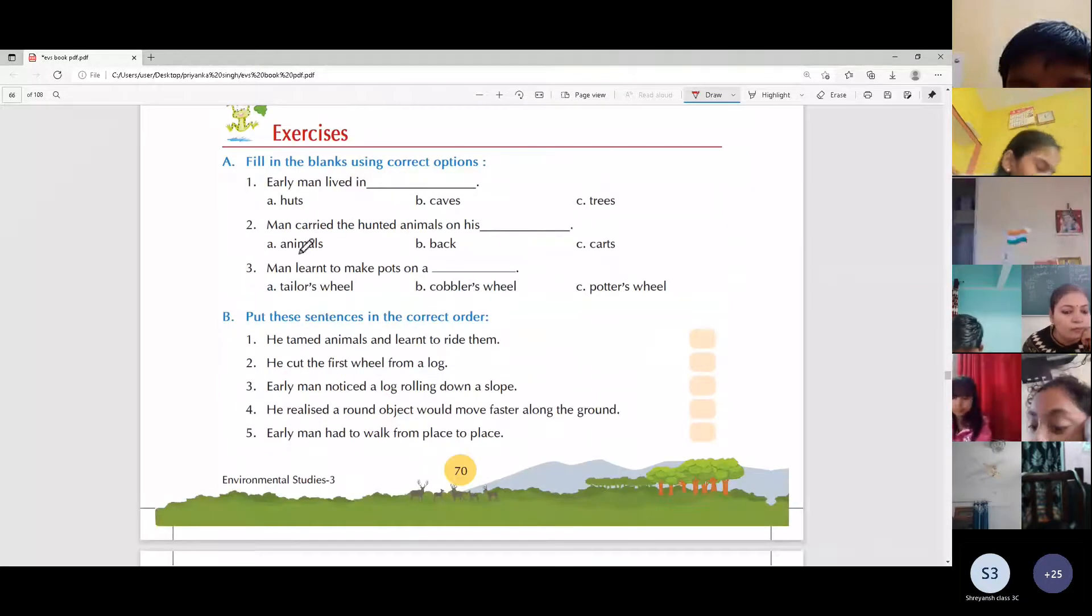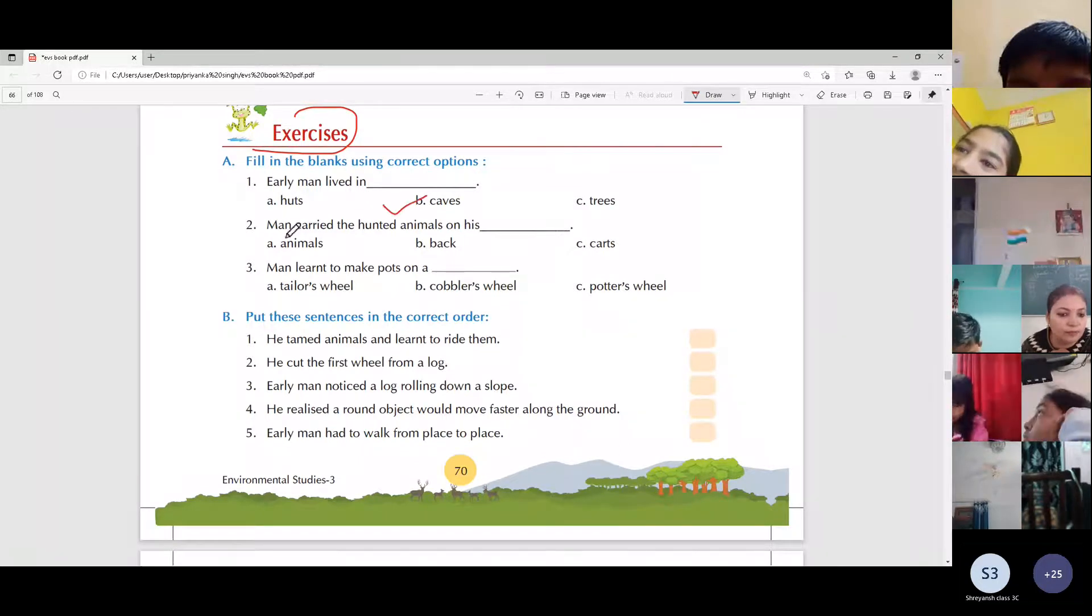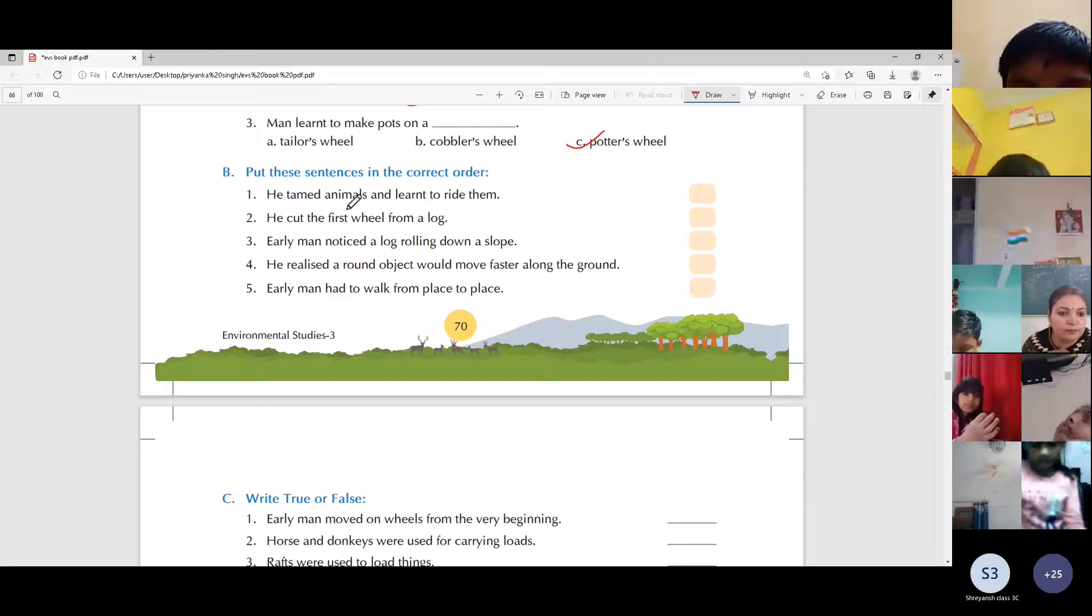Now is the turn of exercises. Fill in the blanks using correct option. Early man lived in caves. Man carried the hunted animals on his back and learned to make pots on a potter's wheel. Put these sentences in the correct order.